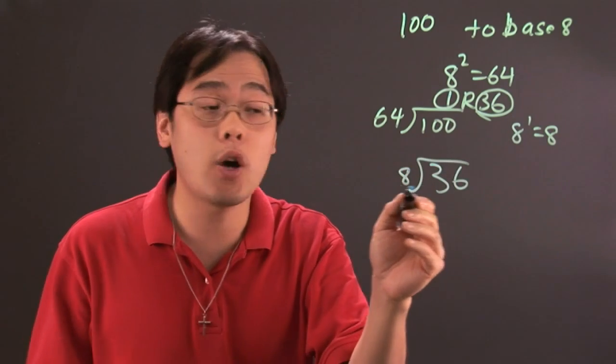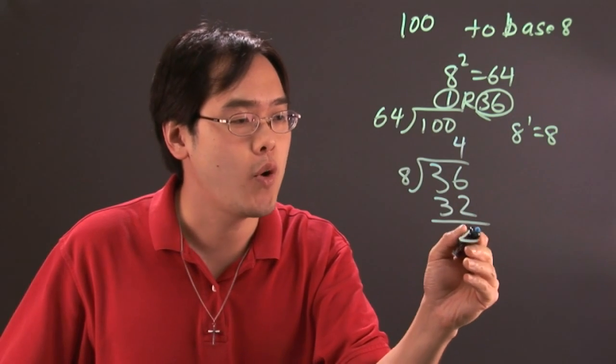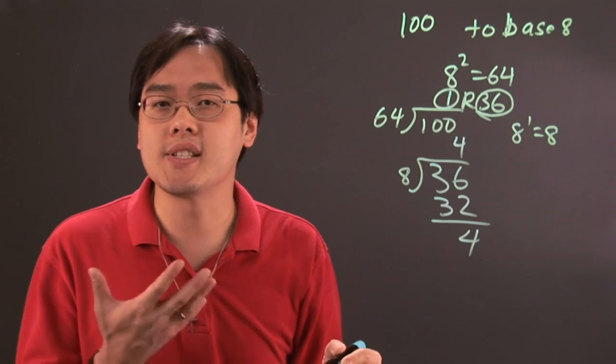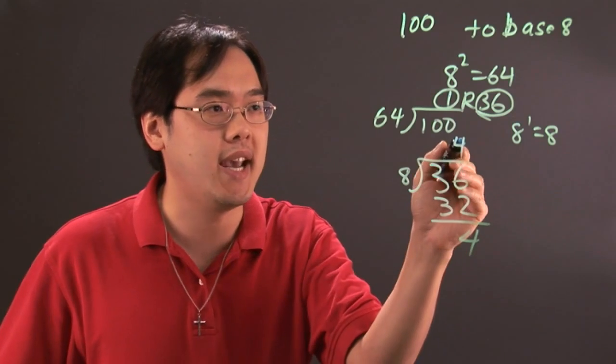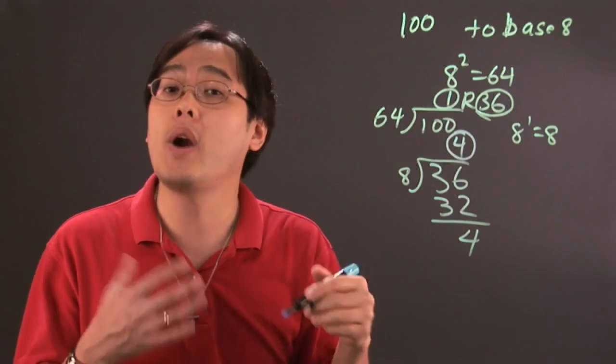As you know 8 goes into 36 four times. 4 times 8 is 32 remainder 4. That means the second digit of base 8 as you're converting from 100 is going to be 4. We're actually almost there.